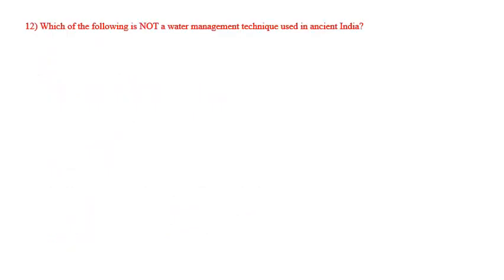Which of the following is not a water management technique used in ancient India? Options: canals, dams, ponds. The answer is dams.